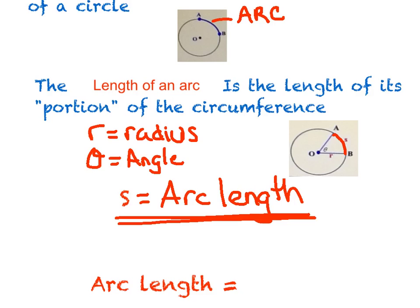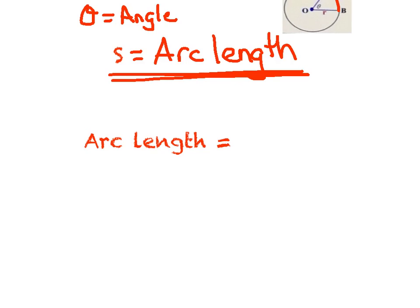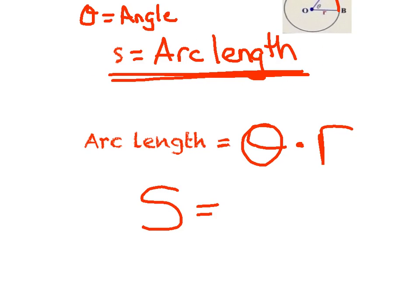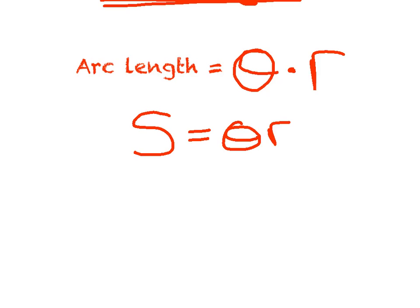S is your arc length. Just like anything else in math, we have a nice easy formula: arc length equals theta times r. The formula we use is s equals theta r. Sometimes you'll hear us call it the SOAR formula — s equals theta r — just an easy way to say it and help you memorize it.